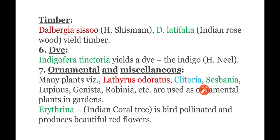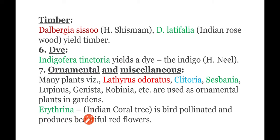For ornamental and miscellaneous uses, many plants like Lathyrus odoratus, Clitoria, Sesbania, Lupinus, and Robinia are used as ornamental plants in gardens. Erythrina, also called the Indian coral tree, is bird-pollinated and produces beautiful red flowers. This concludes the economic importance of the Fabaceae or Papilionaceae family.